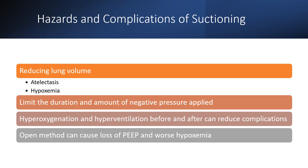Reduced lung volumes — atelectasis and hypoxemia — are among the biggest hazards. Not only are you suctioning out secretions, you're also suctioning out gas from the lungs. This is another reason suctioning at timed intervals is inappropriate — if there's no indication, you may be causing more harm than good each time. If secretions are in the central airways and can come out with suctioning, great; but if they're in the distal airways, consider other methods of airway clearance therapy.